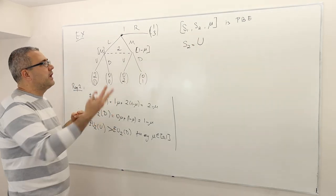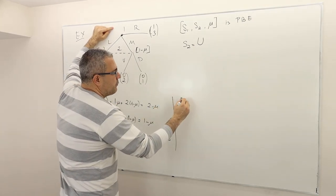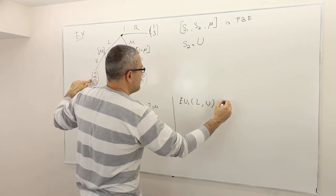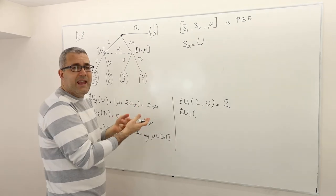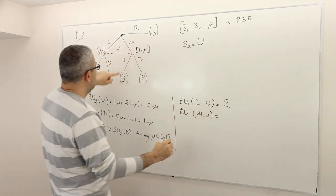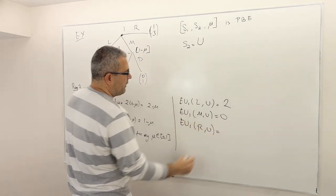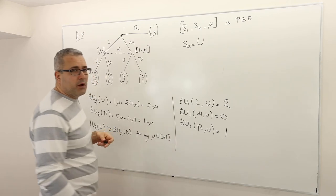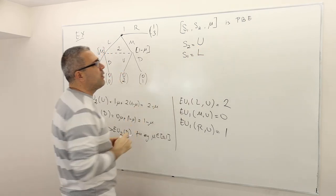Given that the second player is going to play U, what is the best response for player one? The expected payoff of player one if he plays L, given his opponent plays U, is 2. The expected payoff of playing M, given his opponent plays U, is 0. And the expected payoff of playing R, given his opponent plays U, is 1. So obviously, L is the best response to U. Therefore, in any perfect Bayesian equilibrium, player one should be playing left.